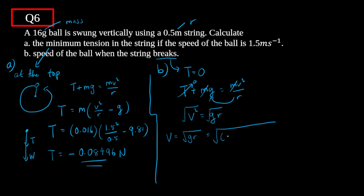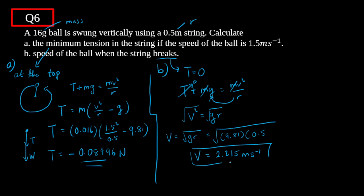Solving for v: v = √(gr) = √(9.81 × 0.5) = 2.215 meters per second. So the speed of the ball when the string breaks is 2.215 meters per second.